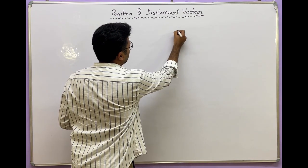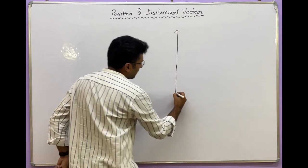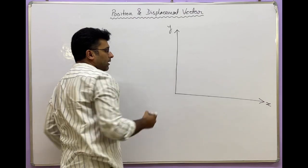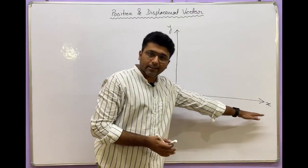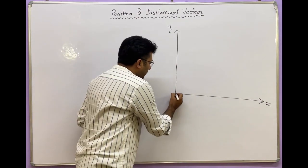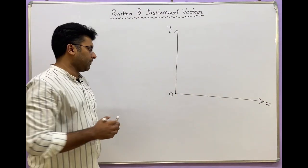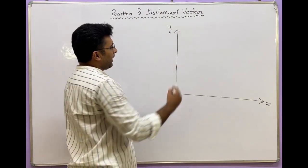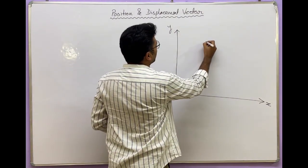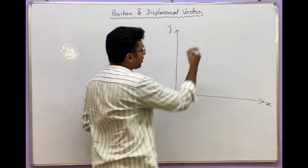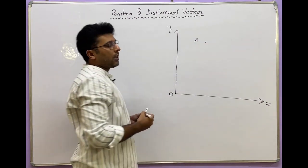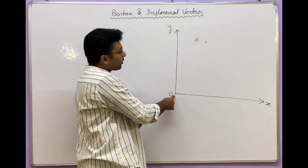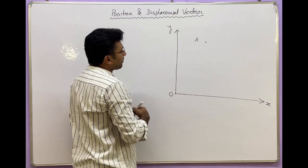I will draw a simple coordinate system. Suppose this is my x-axis and this one is my y-axis — a two-dimensional coordinate system. This is the x-axis, this is the y-axis, and this point here is the origin O.